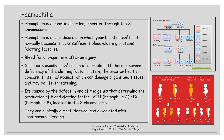Now we are going to discuss an example of sex-linked inheritance, which is hemophilia. Hemophilia is a genetic disorder inherited through the X-chromosome and is a clotting disorder where the blood does not clot. It is a rare condition in which blood does not clot normally because of the lack of sufficient clotting factors.